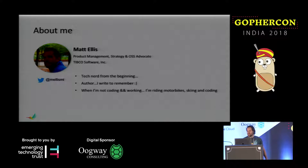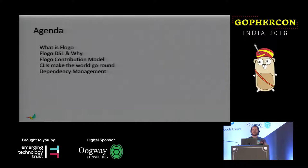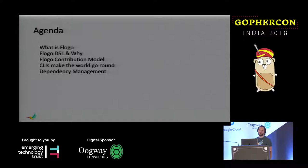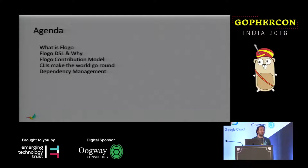So very briefly, we'll quickly talk about what FloGo is. I don't want to spend too much time on the project specifically — I really want to talk about some of the tech elements. We'll jump into that, talk about the FloGo domain, the DSL — the domain-specific language and why we built one — as well as the FloGo contribution model and how the framework can be extended. The CLI dependency management, and I'll show you a quick demo if we have time.